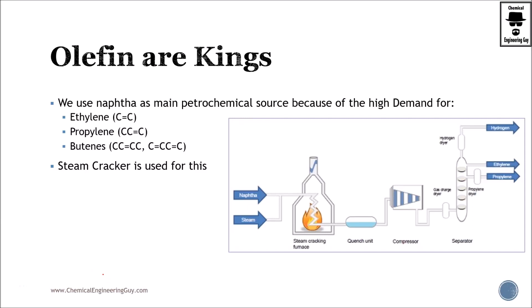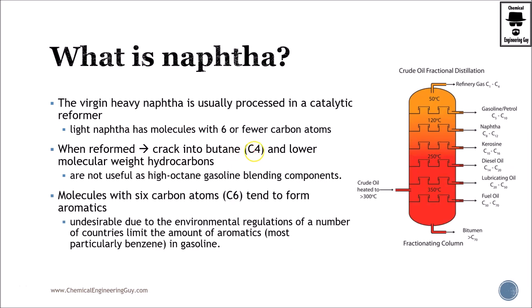This video is to ensure that you know the importance of olefins. Olefins are double-bonded hydrocarbons such as ethylene, propylene, and butane — such as butylene or butadiene, which has two double bonds.